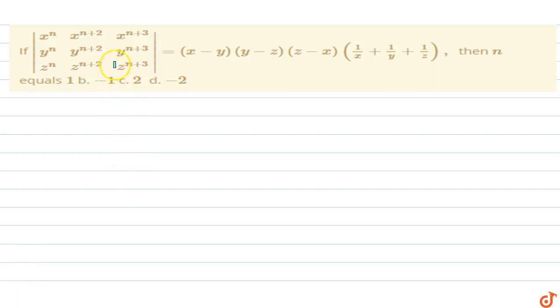In this question, if the value of this determinant equals to x minus y into y minus z into z minus x into 1 by x plus 1 by y plus 1 by z, then n equals to. So let us solve this.